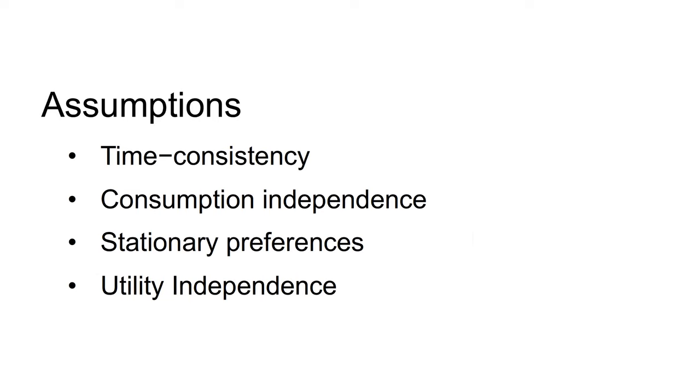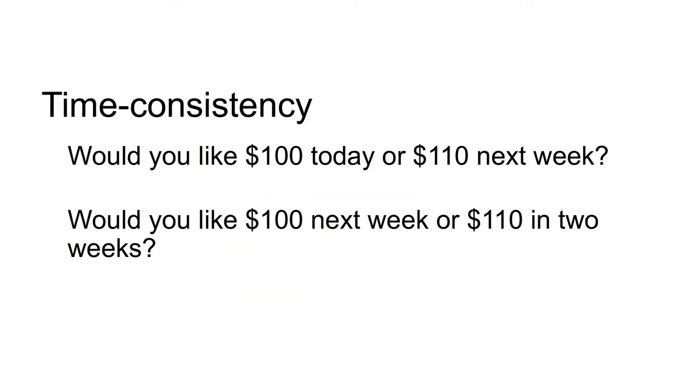The standard model of exponential discounting is underpinned by several assumptions. The first is time consistency. Once the agent starts moving along the consumption path, they are time consistent with their initial plan. For example, consider an agent with these two choices: Would you like $100 today or $110 next week? Would you like $100 next week or $110 in two weeks?